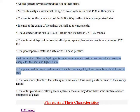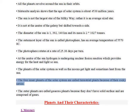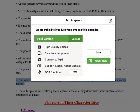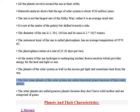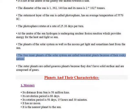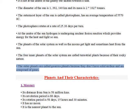At the center of the Sun, hydrogen is undergoing nuclear fusion reaction which provides energy for the heat and light, so the planets of the solar system as well as the moons get light and sometimes heat from the Sun. The four inner planets are called terrestrial planets because of their rocky nature. The outer planets are called gaseous planets because they don't have a solid surface and are composed of gases.